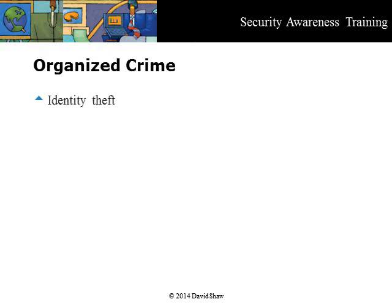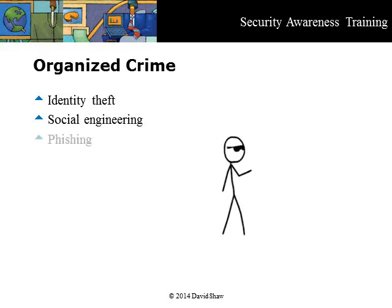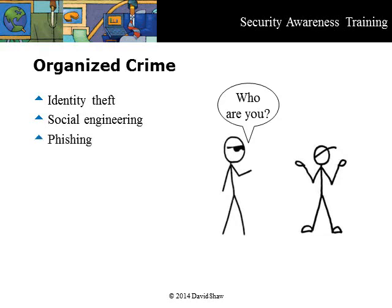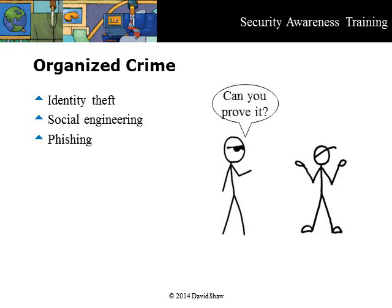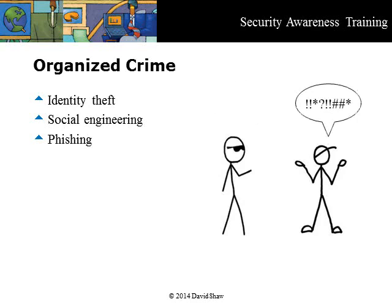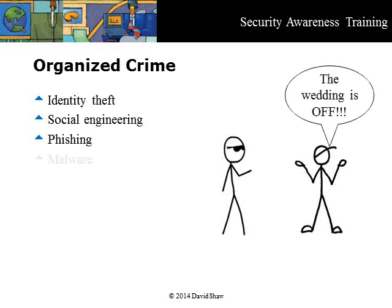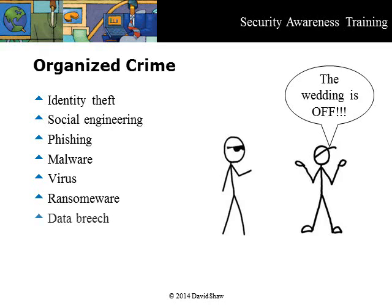Organized crime uses social engineering for identity theft and to steal your money or data. Social engineering and techniques like phishing are covered in other modules in this series. Organized crime also uses software like malware and virus programs to attack your computer and network in order to gather information. A new type of attack is ransomware, which locks your screen or encrypts your hard drive, then prompts you to pay a ransom demand online to get the key to release your computer. Organized crime also takes advantage of big data about you collected by companies.